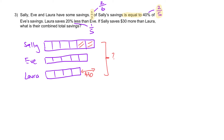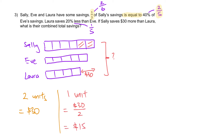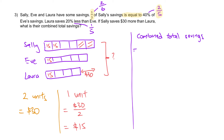We can see that 2 units is $30. So 1 unit will be $15. Each unit is $15. The last step — what is their combined total savings? How many units are there? 6 plus 5 plus 4 gives us 15 units. So the combined total savings will be $15 per unit times 15 units, which gives us $225 as the answer.